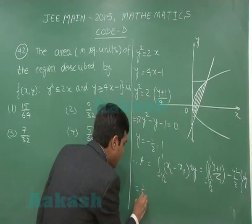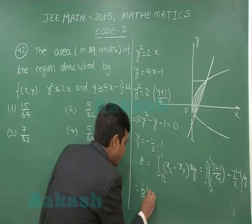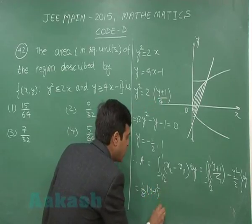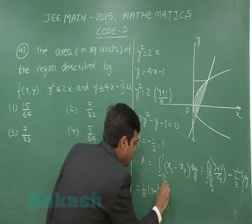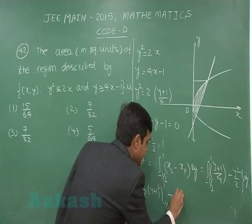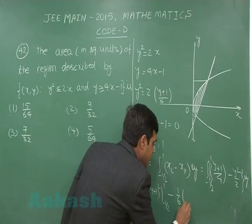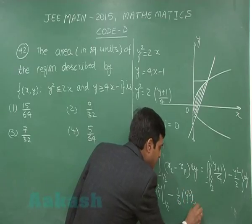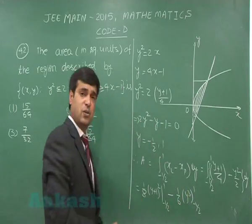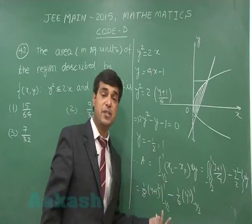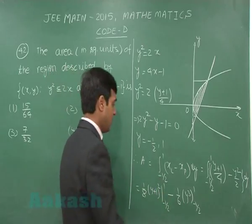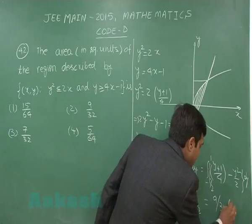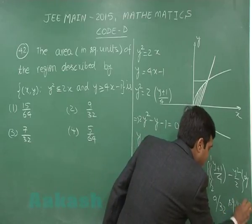Simply integrate to get the result as (1/8)(y + 1)² from -1/2 to 1, minus (1/6)y³ from -1/2 to 1. So simply substitution of the limits to get the required result that comes out as 9/32 square units.